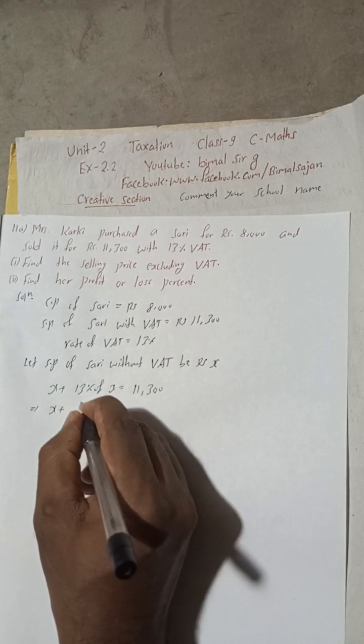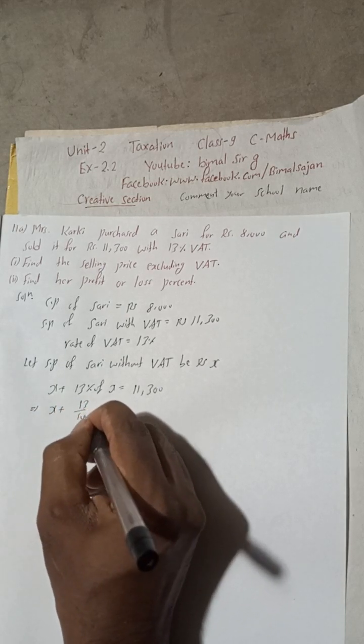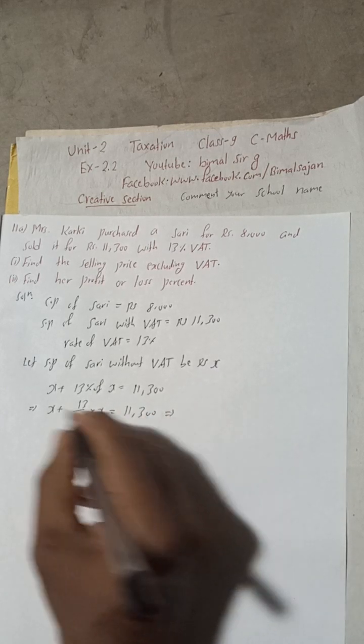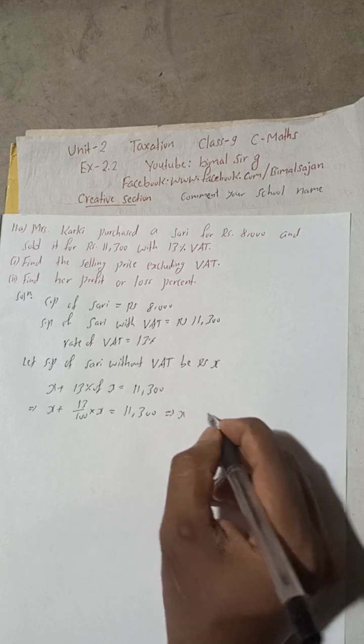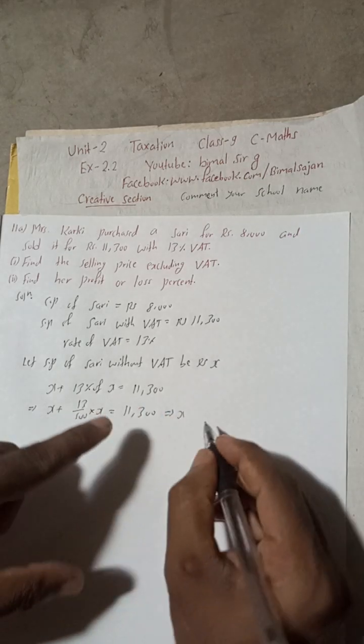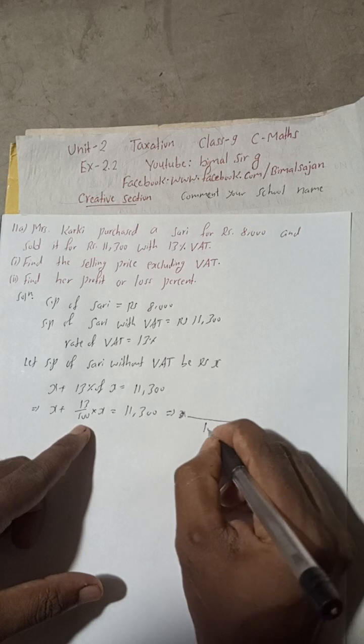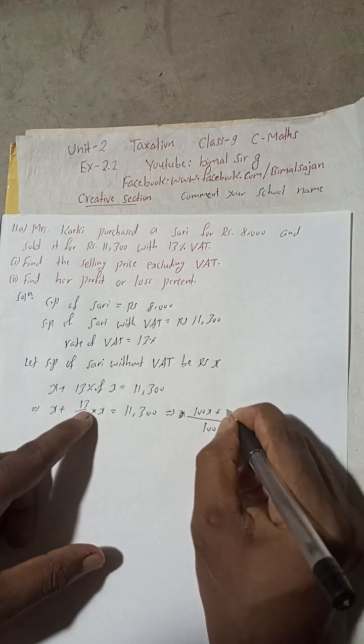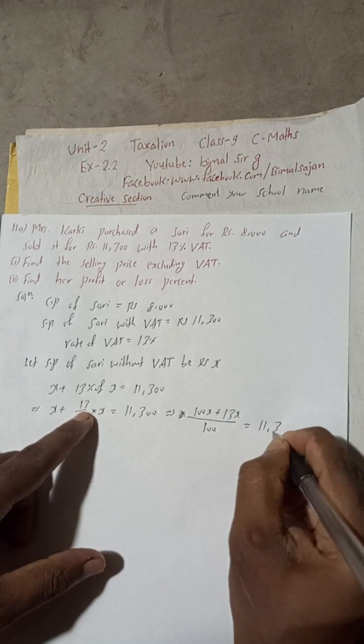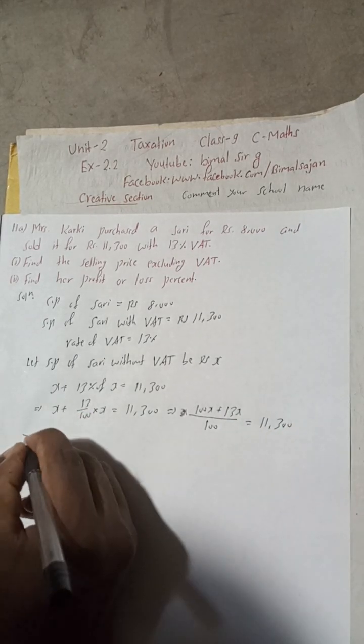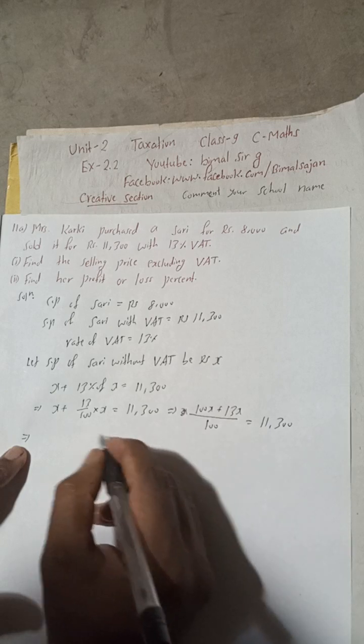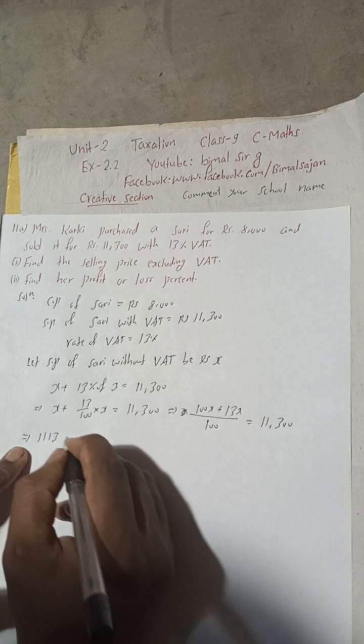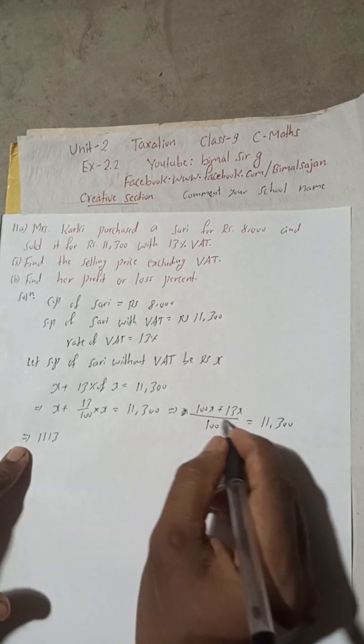Now x plus 13 percent means 13 divided by 100, of means multiply, x is equal to this much. This implies the LCM is 100. So 100 times x, 100x, plus 13x is equal to 11,300. So this is now 113x.